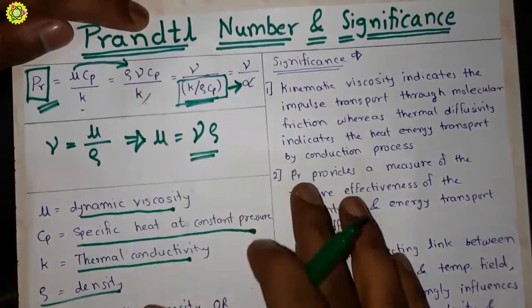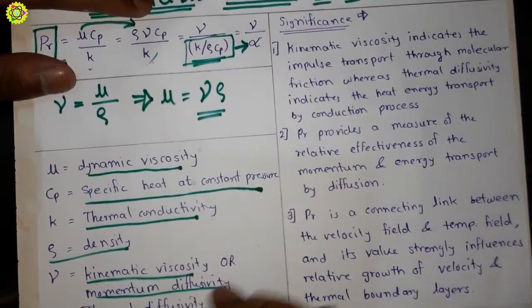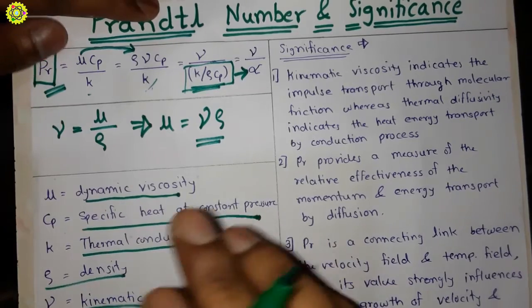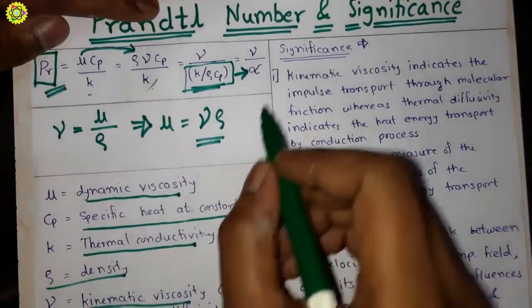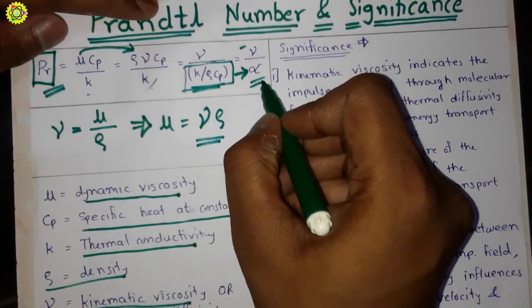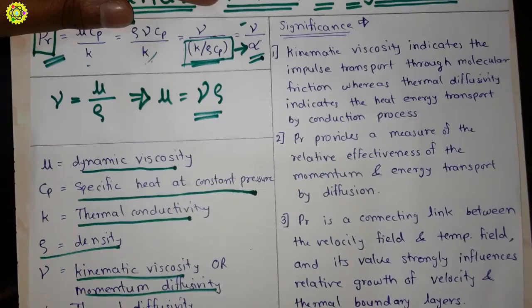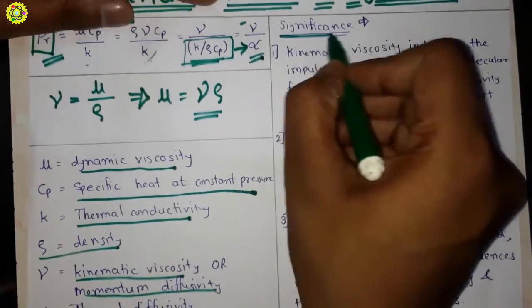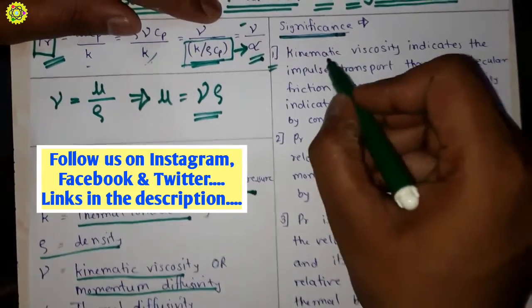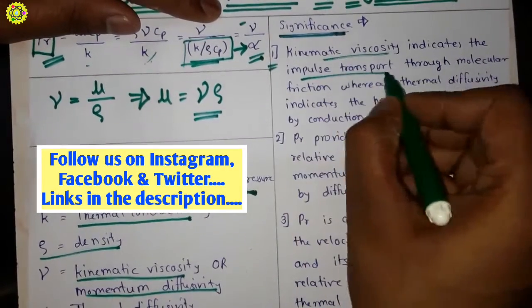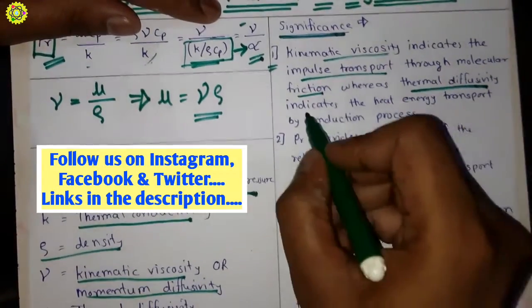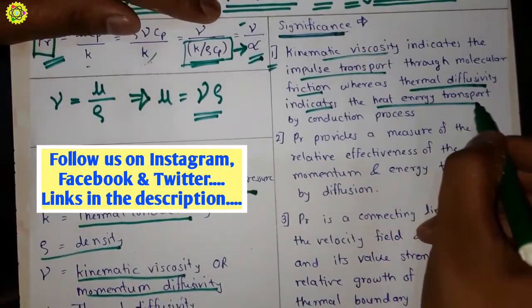So here friends, Prandtl number is defined as the ratio of kinematic viscosity to thermal diffusivity. Now here, significance of Prandtl number. First: kinematic viscosity indicates the impulse transport through molecular friction, whereas thermal diffusivity indicates the heat energy transport by conduction process.